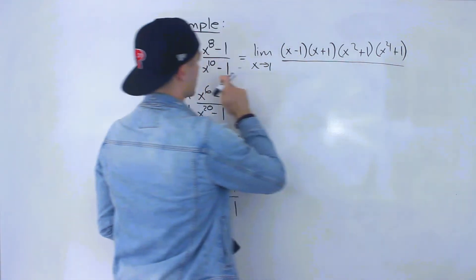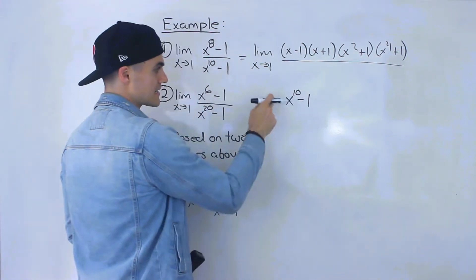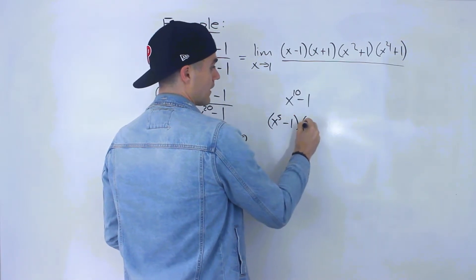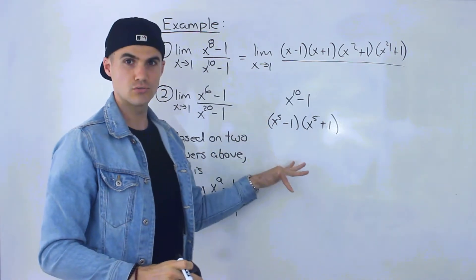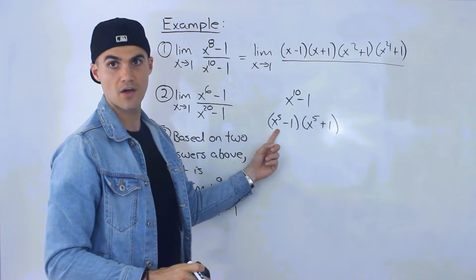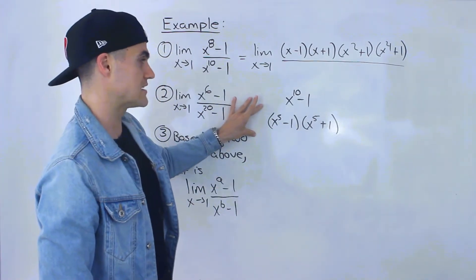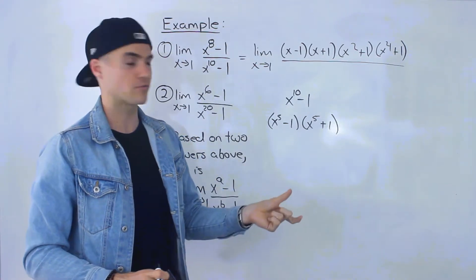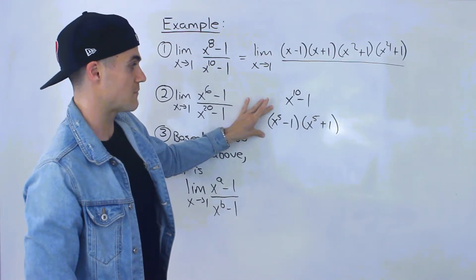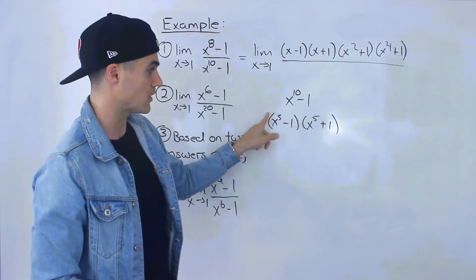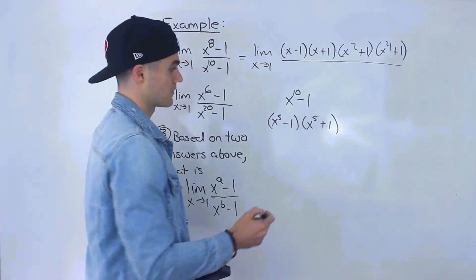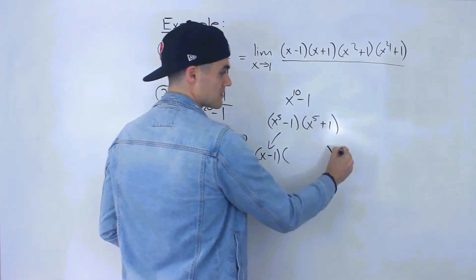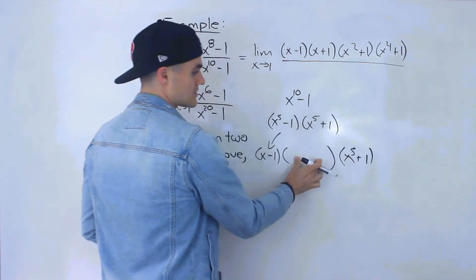Now let's factor x to the power of 10 minus 1. This one is trickier. We can do a difference of squares giving x to the power of 5 minus 1 times x to the power of 5 plus 1. But 5 doesn't divide by 2 smoothly so we can't apply difference of squares again, and it's not a difference of cubes since 5 is not a multiple of 3. However, x minus 1 is definitely a factor of x to the power of 5 minus 1 by the factor theorem, since plugging in 1 gives 0. We just need to find the remaining bracket, and x to the power of 5 plus 1 we leave as is.